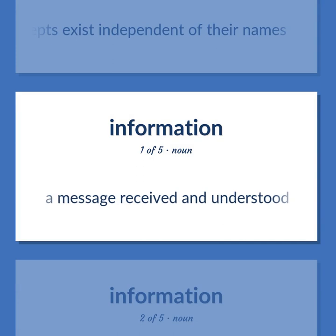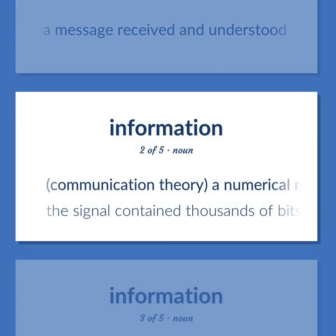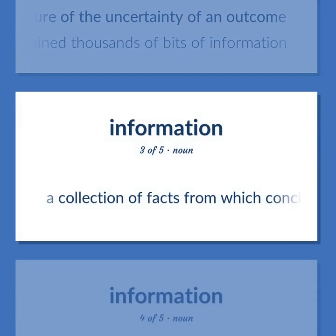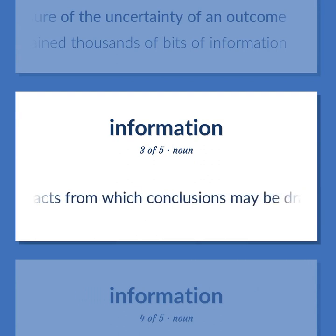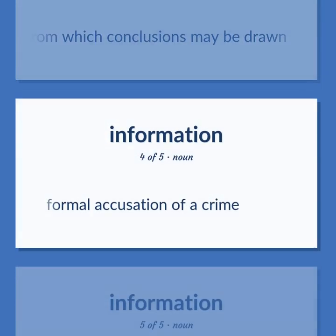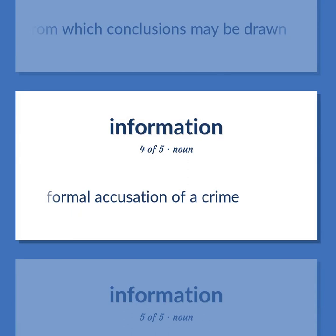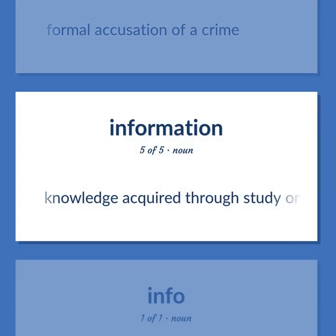Information: A message received and understood. Communication theory: A numerical measure of the uncertainty of an outcome. The signal contained thousands of bits of information. A collection of facts from which conclusions may be drawn. Formal accusation of a crime. Knowledge acquired through study or experience or instruction.